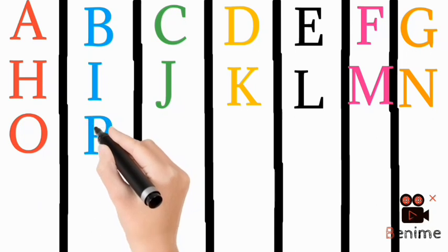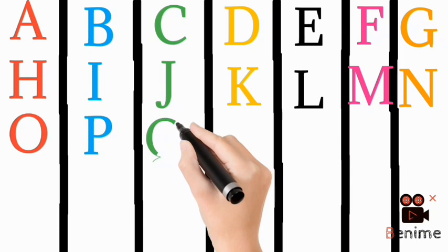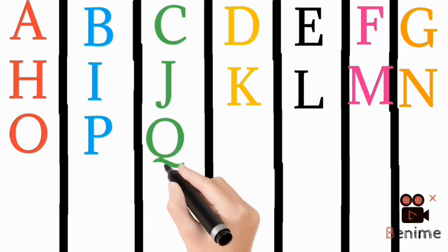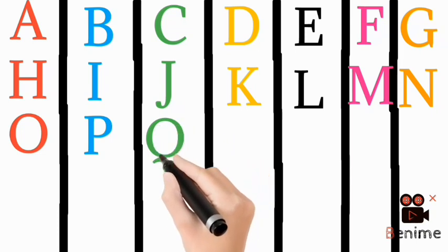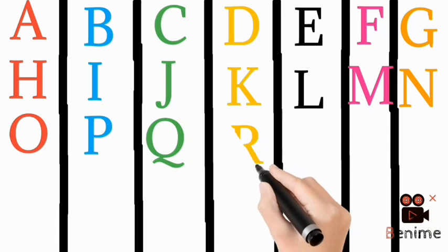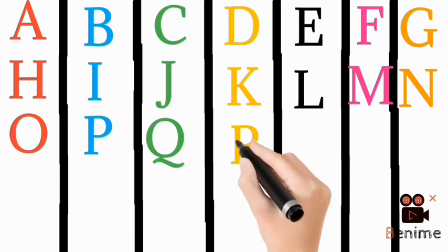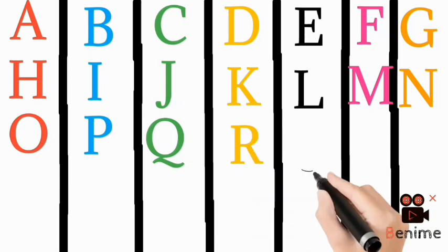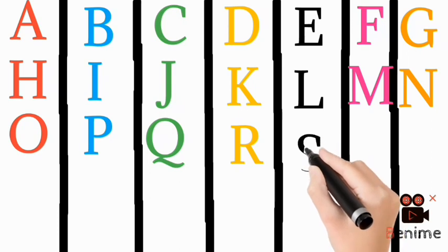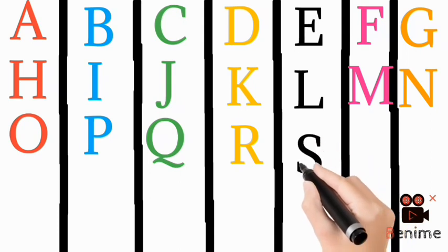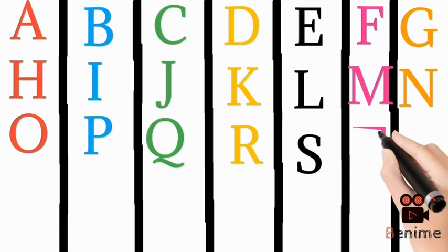Blue color P, P for pencil. Green color Q, Q for queen. Yellow color R, R for rabbit. Black color S, S for sun.